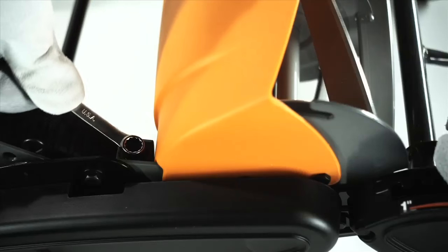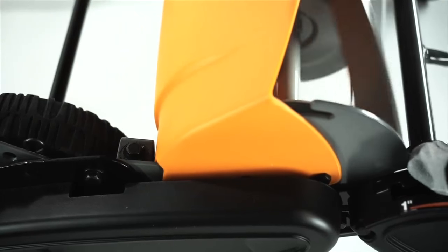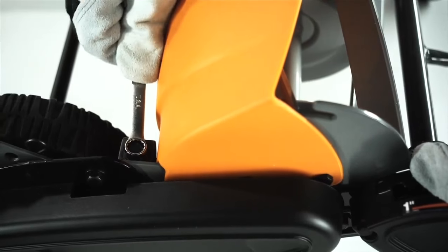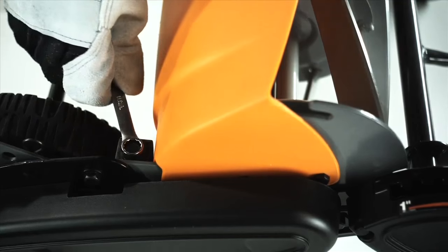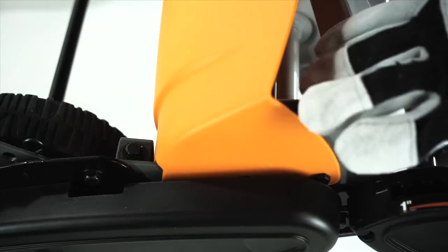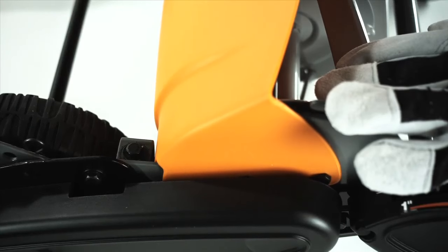If the blades are too far apart, rotate the reel and turn the adjustment dial clockwise just until the reel makes contact with the stationary blade. Then turn the dial counterclockwise to back off slightly.